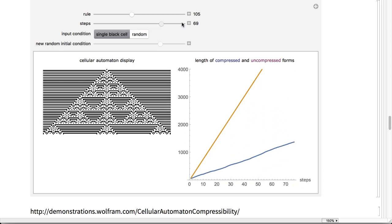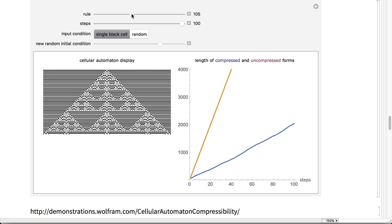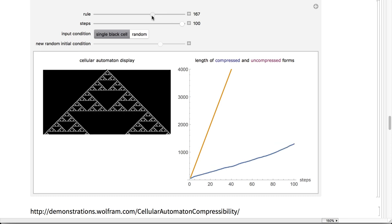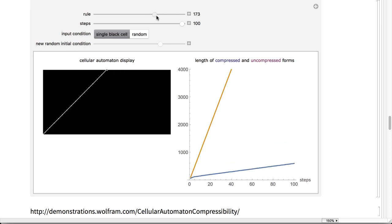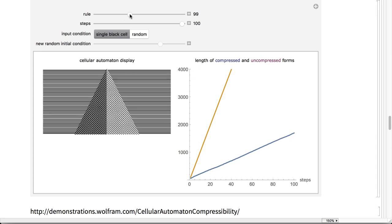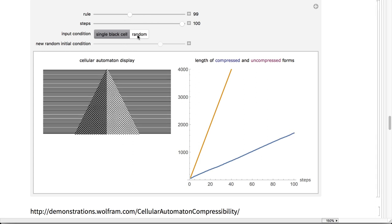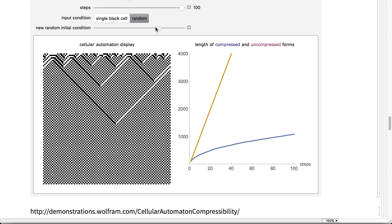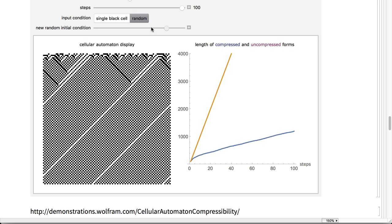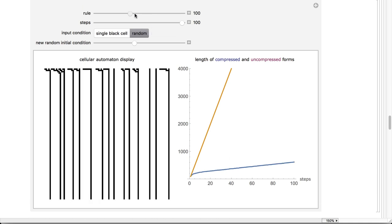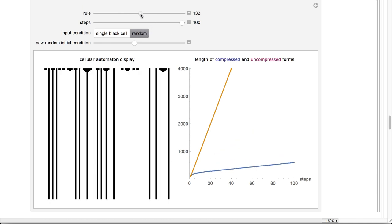For example, the difference in length between the compressed and uncompressed forms of the output of cellular automata is an approximation of their algorithmic complexity. For most cases, the length of the compressed forms levels off, indicating that the cellular automata output is repetitive and can easily be described. However, in cases like rules 30, 45, 110 and 73, the length of the compressed form grows rapidly, corresponding to the apparent randomness and lack of structure in the display.